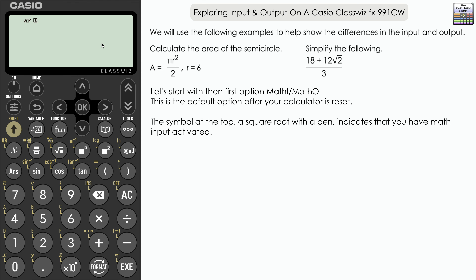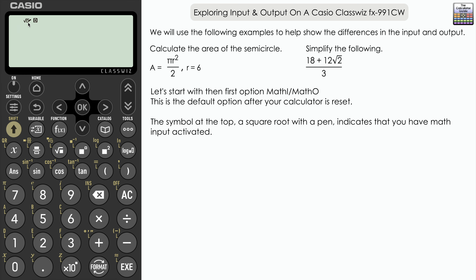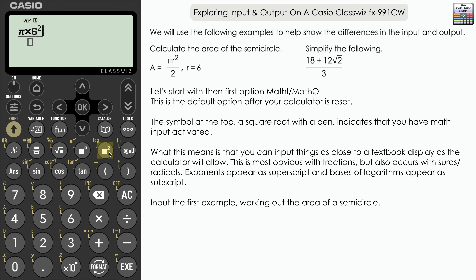At the top you can see a symbol — a square root with a little pen — which indicates that you have math input activated. That essentially means you can input things as close to a textbook display as the calculator will allow, and that primarily means fractions. A fraction will appear as a numerator over a denominator. So if you press the fraction button, it prompts you to input a numerator, then navigate down to write your denominator. Our first example is the area of a semicircle with a radius of 6: pi times 6 squared over 2.